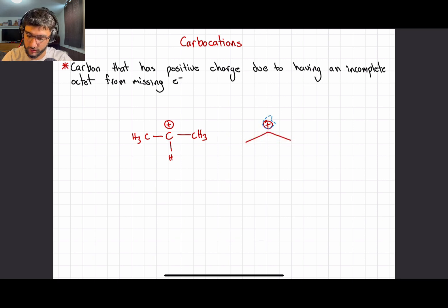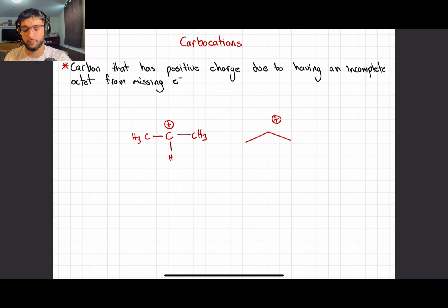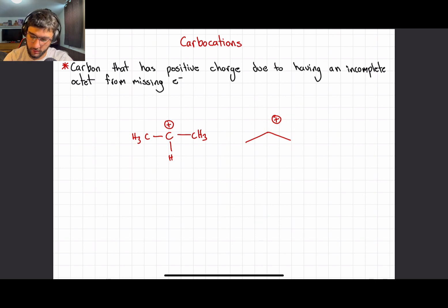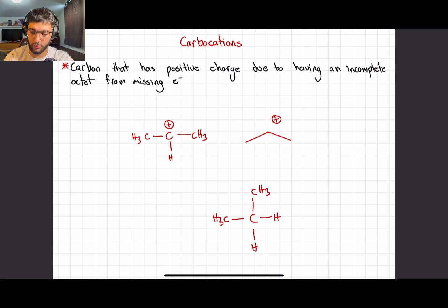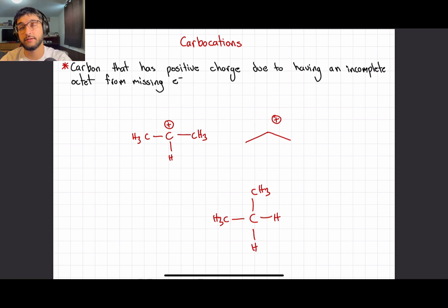Because there's a plus charge on this molecule, we know there's only one H here — if there were two H's it would have four bonds and there would be no plus charge. For a molecule that has four bonds and no plus charge, it would not be considered a carbocation because it has a full octet.